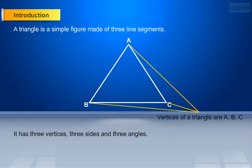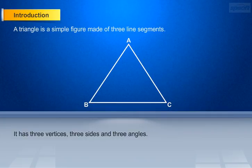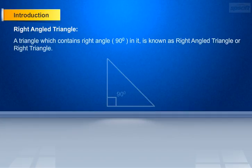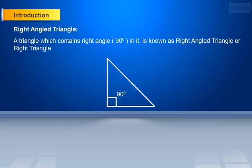Vertices of a triangle are A, B, C. Let us look at the right angle triangle. A right angle is the internal angle of a triangle which is equal to 90 degrees. A triangle which contains a right angle of 90 degrees in it is known as a right angle triangle, or right triangle.